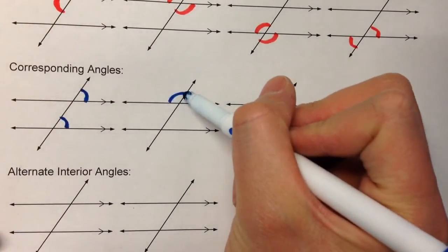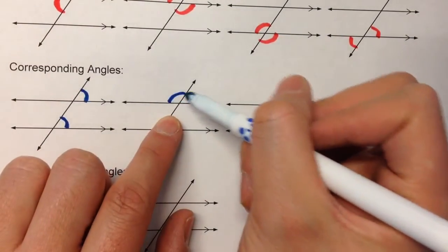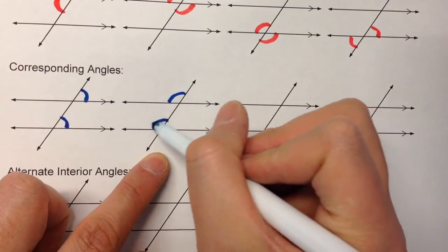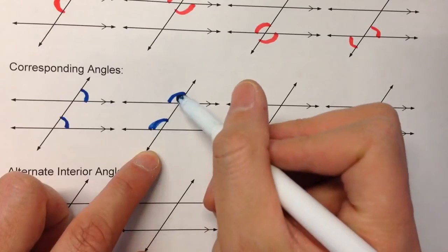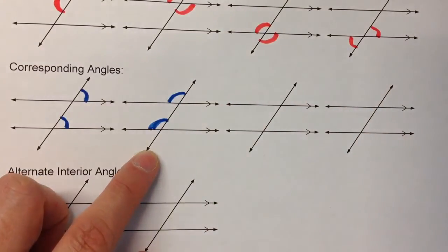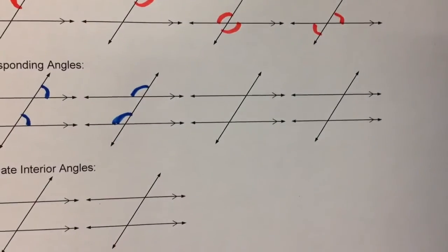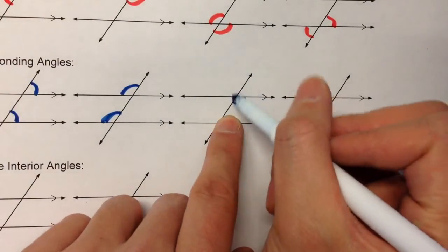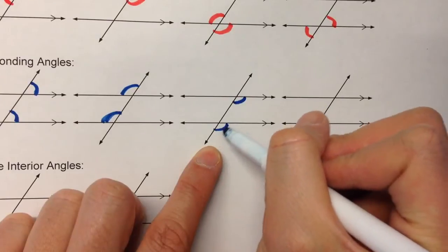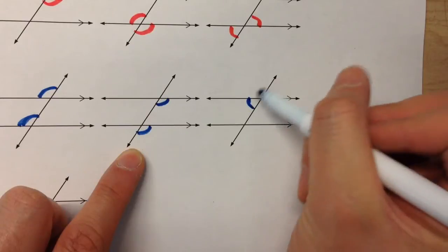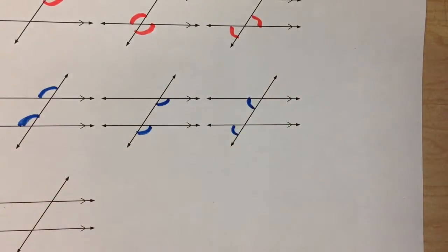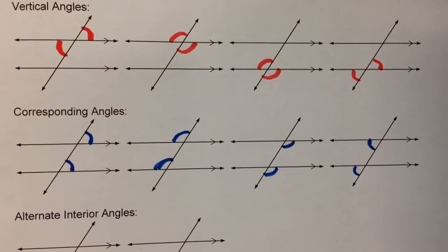Or we could look at this angle right here — it's in the upper left corner of this group of angles. So when we go down here, the upper left corner angle is that one, so these two are corresponding angles. There are two more sets: the bottom right angle of this group matches the bottom right angle of that group, and the bottom left angle of this group matches the bottom left angle of that group. Corresponding angles are also equal in measure.